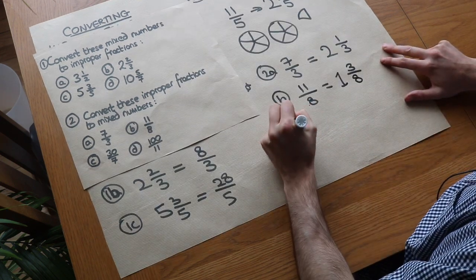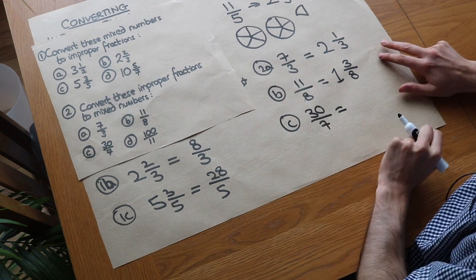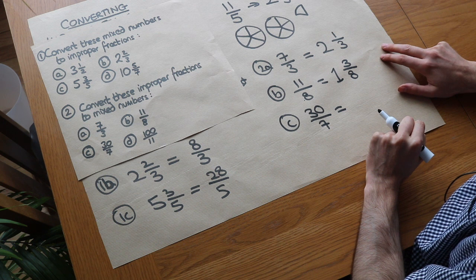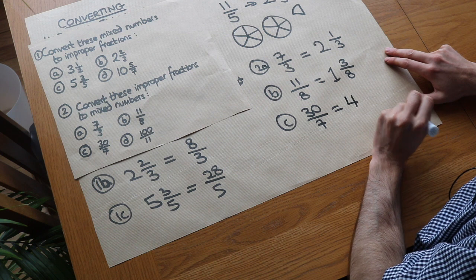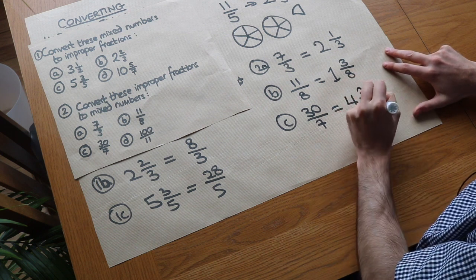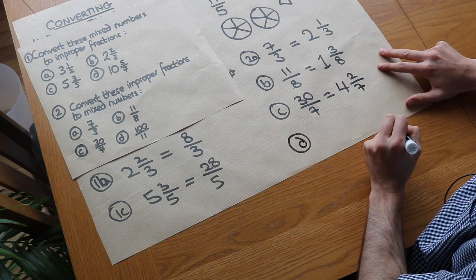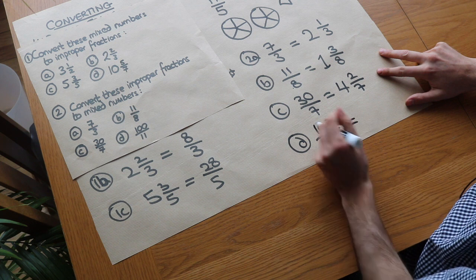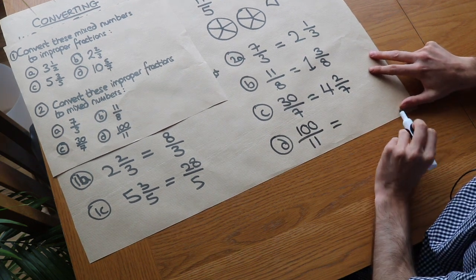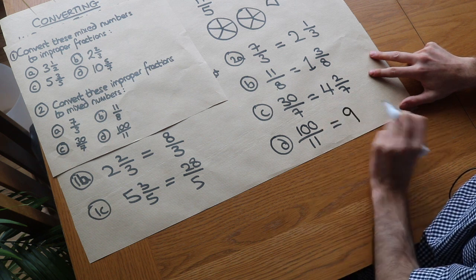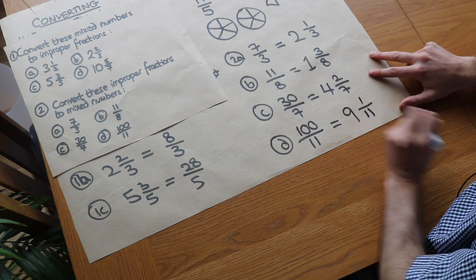What about the next one? Thirty over seven. How many times does seven go into thirty? Well 28 is the greatest multiple. That's four times. So it goes in four whole times and then we have a remainder of two. So it's two over the same denominator, which is seven. And then finally this last one, we've got 100 over 11. How many whole number of times does 11 go into 100? Well it goes in nine whole times. That gets us up to 99. So it goes in nine whole times and we have a remainder of one. So it's one over the same denominator which is 11.